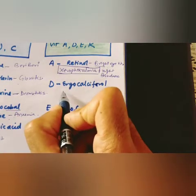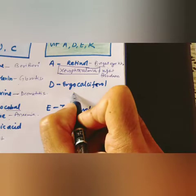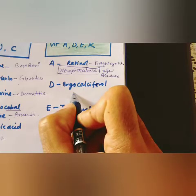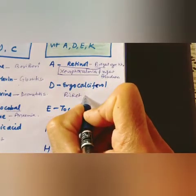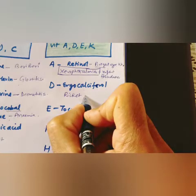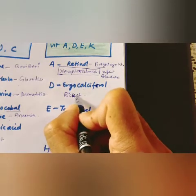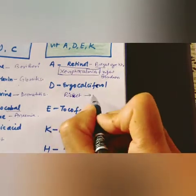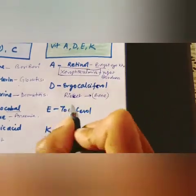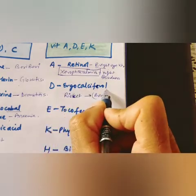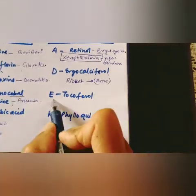Vitamin D is chemically called ergocalciferol. Sources include milk, egg yolk, cod liver oil, and exposure to sunlight. Deficiency of vitamin D causes rickets — bone deformities in children — and osteomalacia in adults, which involves soft bones and joint pain. Doctors recommend calciferol-type medicines to address this deficiency.